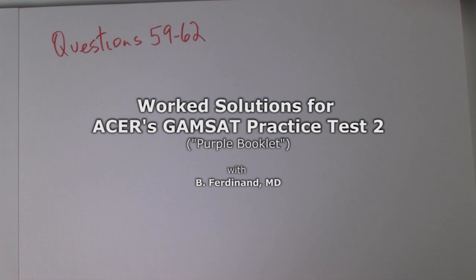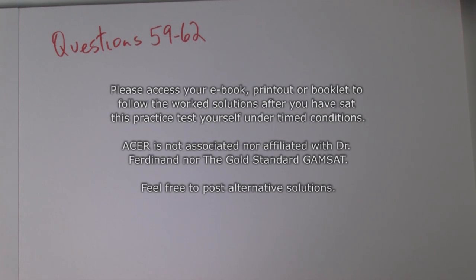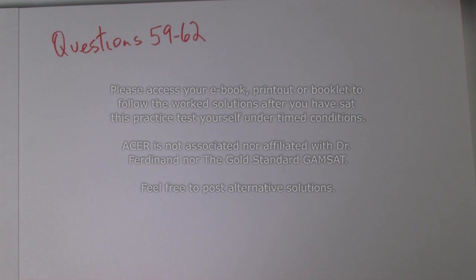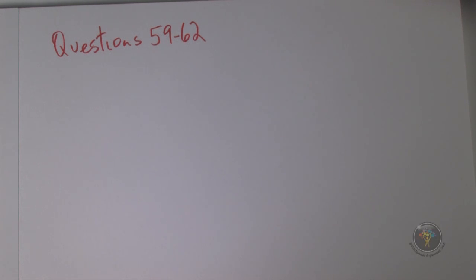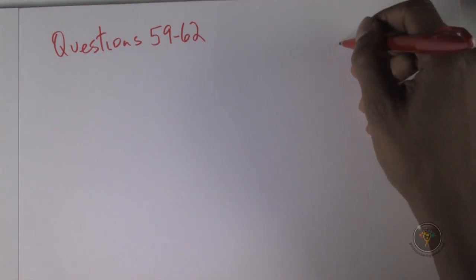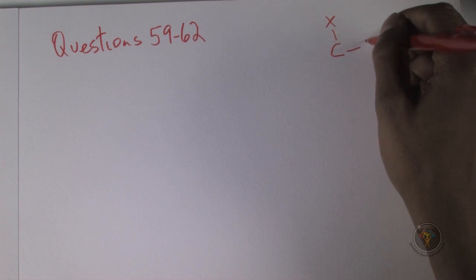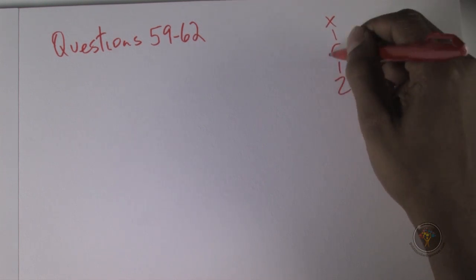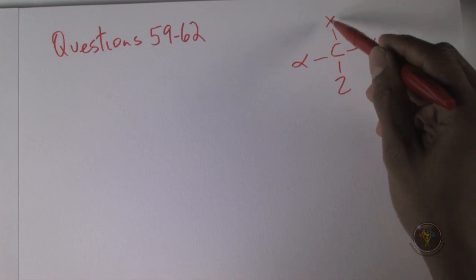Questions 59 to 62. SP3 hybridized carbon — it's a tetrahedral stereocenter with four different groups attached. Notice it says four different groups, not four different atoms; that's where some students get confused. When you're looking for a stereogenic center, stereo center, or chiral carbon, you're looking for a carbon bonded to four different substituents.